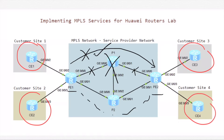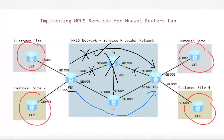The services traffic from customer CE1 to customer CE3 will be disrupted, and the same for customer traffic from CE2 to CE4. The IGP protocol needs to reconverge to select another path, which will be via P2. After reconvergence, the LDP LSP path can be available again so the service traffic can be restored.